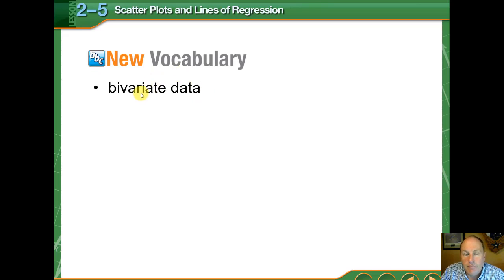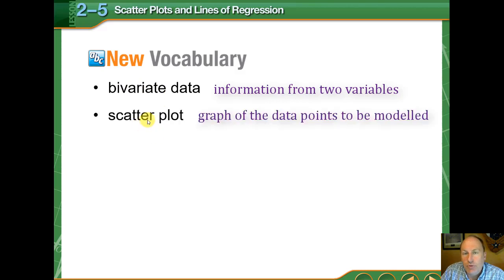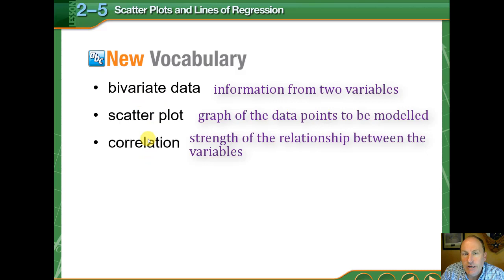Let's look at some vocabulary terms that are involved here. Bivariate data is data that involves the relationship between two variables. A scatter plot is a graph that represents the data that's collected in a situation. Correlation is the strength of the relationship between the two variables involved.